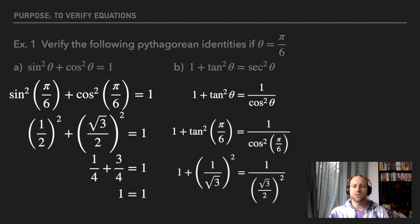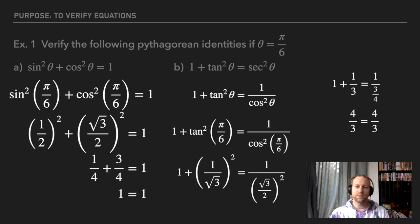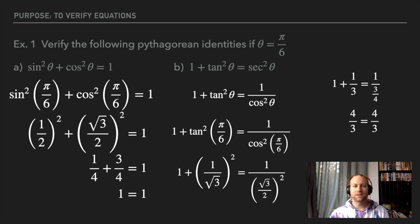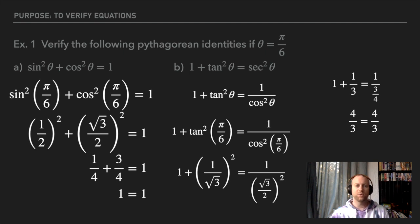The second identity is one plus tan squared theta equals secant squared theta. Secant squared theta equals one over cosine theta squared — a value we can solve for, since secant isn't in your calculator. Plug in pi over six, square both brackets, and doing a little arithmetic you get both sides equal four over three. That proves this identity works for pi over six. The problem with verifying numerically is it only proves the identity works for that specific value — not for the entire equation.